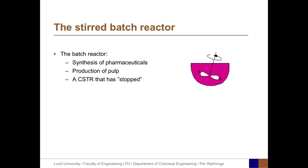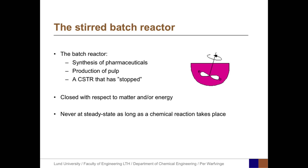The stirred batch reactor is very common in industry. One application is synthesis of pharmaceuticals, where traceability is of utmost importance. Another application is the production of pulp, when wooden chips are boiled together with chemicals in a big batch in order to liberate the fibers used to make paper. A third example is when a CSTR has stopped, for example when the pumps that provide the feed to the reactor have stopped. A batch reactor is closed with respect to matter and/or with respect to energy. The most important characteristic of the batch reactor is that it is never at steady state, as long as a chemical reaction takes place within the reactor.